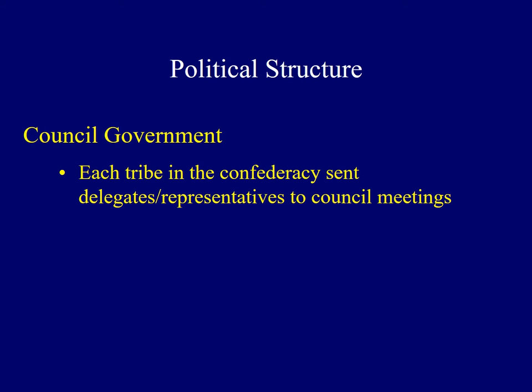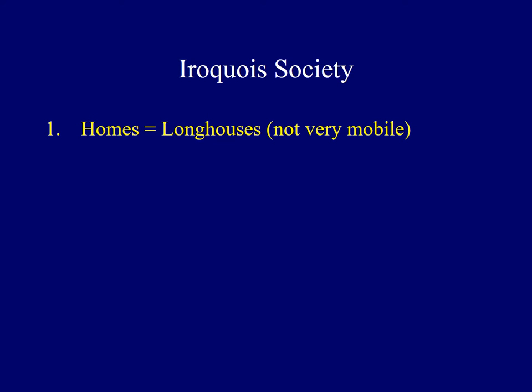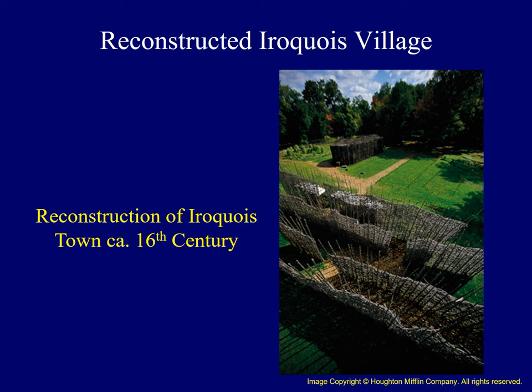Politically, the Iroquois made decisions using a council form of government. Delegates from each of the Indian tribes in the confederacy attended council meetings to discuss issues until a consensus could be reached. The homes they lived in were longhouses, often about 25 feet in width but could range up to 200 feet in length. Several families would live under the roof of one longhouse. This photo shows a partial reconstruction of an Iroquois town from the 16th century. Iroquois towns usually consisted of several rows of longhouses surrounded by a defensive wall. These were strong, weather-resistant living quarters which included as many as three to five fireplaces. Baskets, pots, pelts, and food were also stored inside the longhouse.